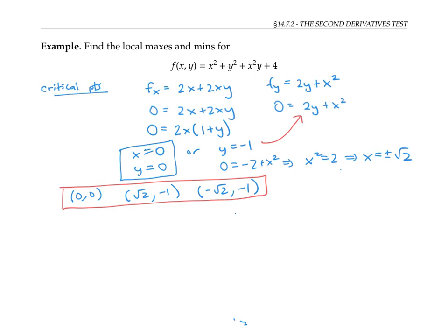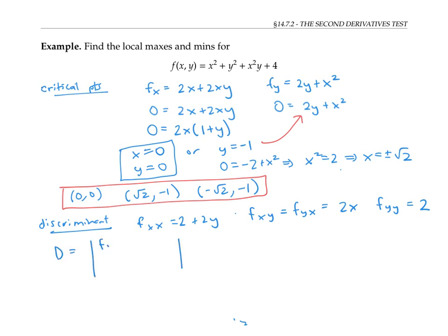To apply the second derivatives test, we need to find the discriminant, so we find the second partials: f sub x,x = 2 + 2y; f sub x,y and f sub y,x are both 2x; and f sub y,y = 2. We find the discriminant by taking the determinant of the matrix of second partials, which equals (2 + 2y)(2) − (2x)² = 4 + 4y − 4x².